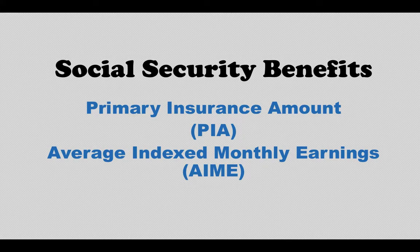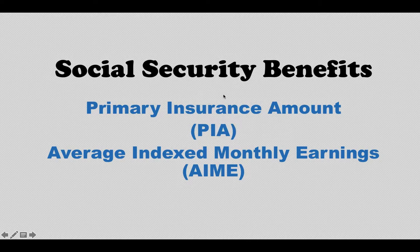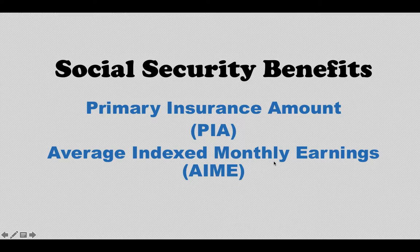In this video I'm going to talk about how your Social Security benefits are calculated. In order to calculate your Social Security benefits you need to know two very important things. First is Primary Insurance Amount, PIA — you hear this a lot. The second one is Average Indexed Monthly Earnings, AIME. You don't really hear this one that much because it's mainly used to find out the PIA.